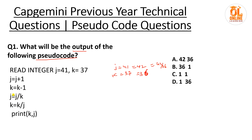Since this is integer division in pseudocode, 42 divided by 36 gives 1 (it's 1.something, so integer division makes j equal to 1). Next, k equals k divided by j, which is 36 divided by 1, that is 36. So print k, j gives 36, 1 — option B is the correct answer. Moving to the next question.